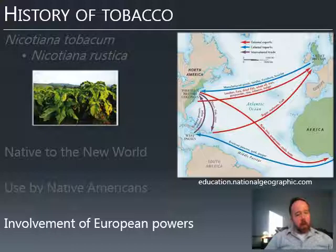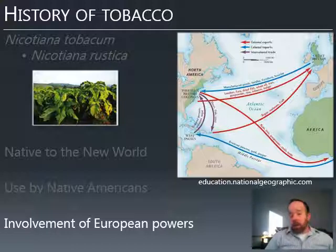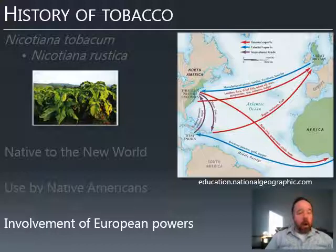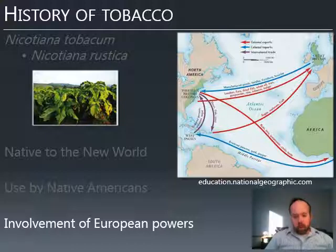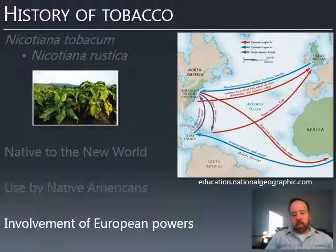Tobacco was an economic product exported to Europe for consumption. Europe had the industrial capacity to make manufactured goods, which were transferred back to the New World. And of course, there was also the unfortunate aspect of this: the trade in African slaves — individuals captured by European powers and forcibly transferred to the Caribbean and North America to grow these agricultural products. This was an economic system whose moral implications weren't really considered for quite some time, and even then, those whose livelihood depended on it tended to ignore the moral aspect.